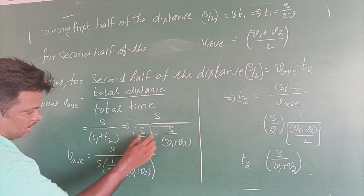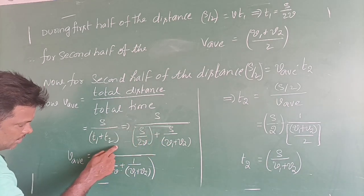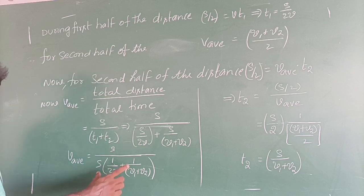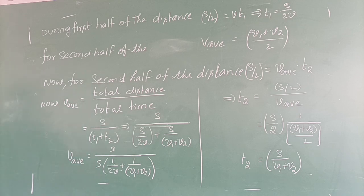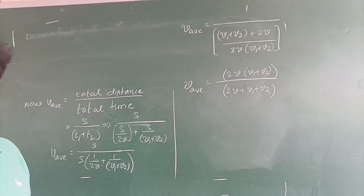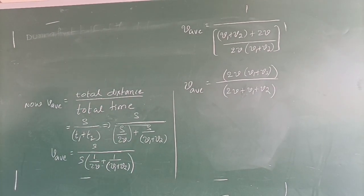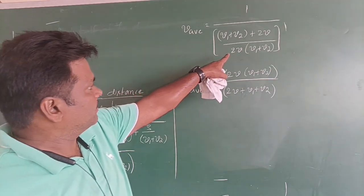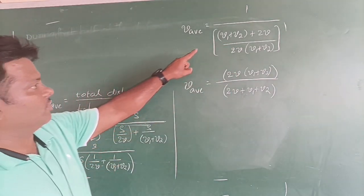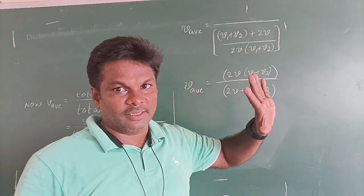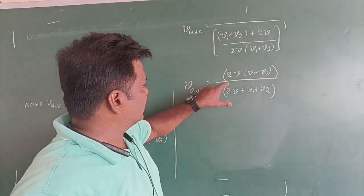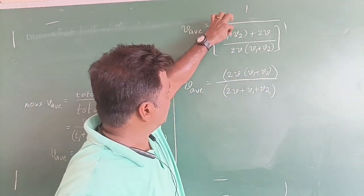Now the simplification is there. We will do that — go through this once. We got V_average here. Taking 2V(V1 + V2) as LCM, the remaining terms will be V1 + V2 + 2V. By doing LCM you will get just the reciprocal — this will come into the denominator and this whole thing will be the denominator.